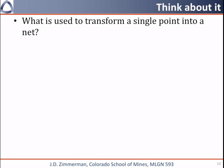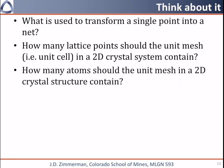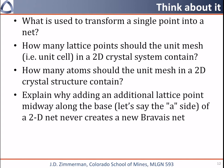I have some things I'd like you to think about. Make sure you know what is used to transform a single point into a net or a lattice. How many net points should the unit mesh or unit cell in a two-dimensional system contain? How many atoms should the unit mesh in a two-dimensional crystal structure contain? Finally, explain why adding an additional lattice point midway along the base — say the A side — of a two-dimensional net never creates a new Bravais net.